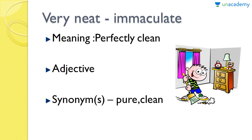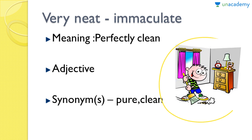The last word is 'very neat' or 'immaculate.' 'Immaculate' basically means perfectly clean. If you say someone looks immaculate, you mean they are spotless — simply very, very clean or perfectly clean. It's an adjective used to describe nouns. The synonyms are 'pure' and 'clean.' Look at this picture — this looks immaculate. This guy has done his work and this place now looks immaculate: very neat, clean, perfectly clean.